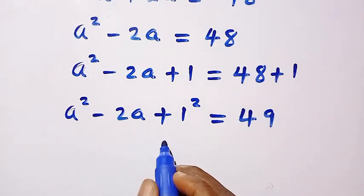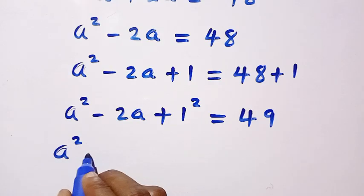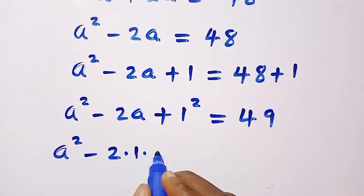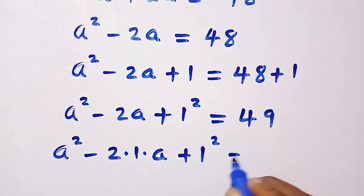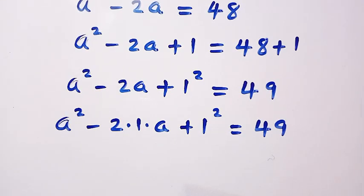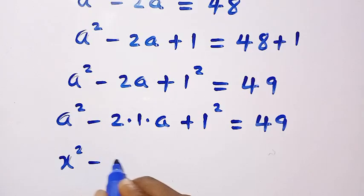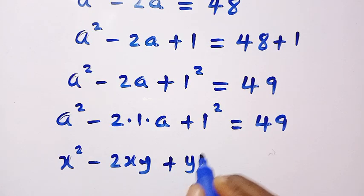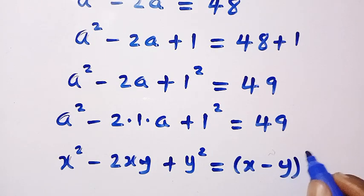I want to apply one identity here. Suppose this one is also written as a squared minus 2 times 1 times a plus 1 squared equals 49. If I relate this with x squared minus 2xy plus y squared, this is given as x minus y all squared.